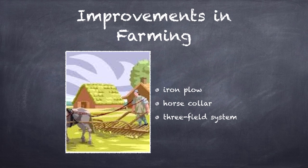Probably the biggest advancement, still used today, was the three-field system. The three-field system was where you had crops you'd grow in one field, some other crops you grew in a different field, and then one field was left fallow, or unplanted. Every season you changed which one you didn't plant, so the nutrients could be returned to the soil and you could grow bigger and better crops.